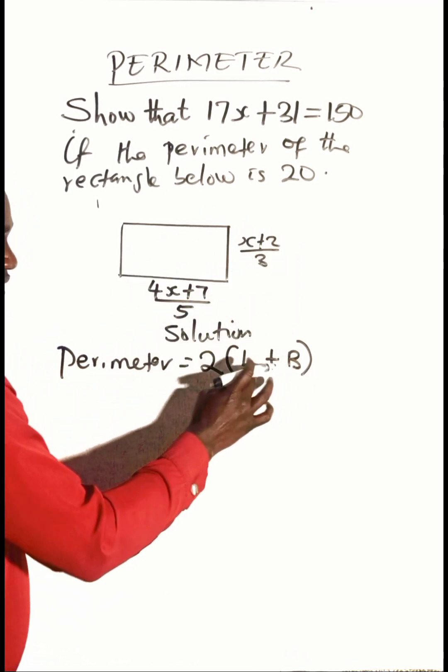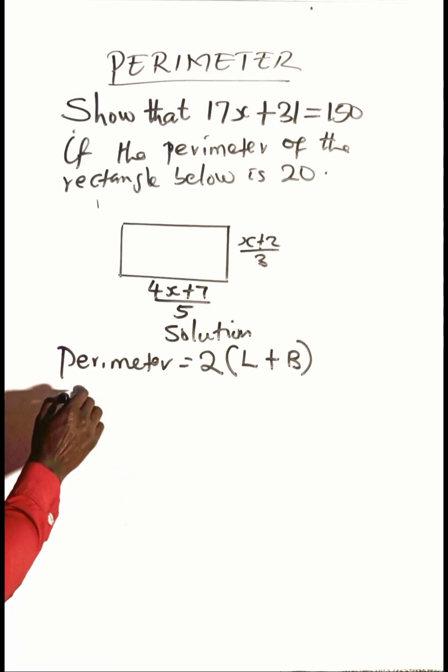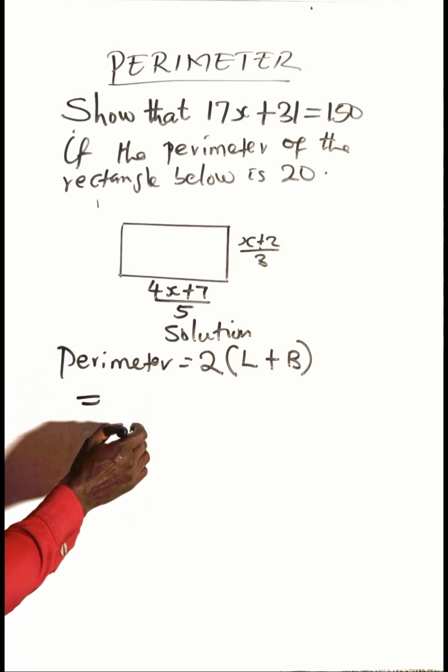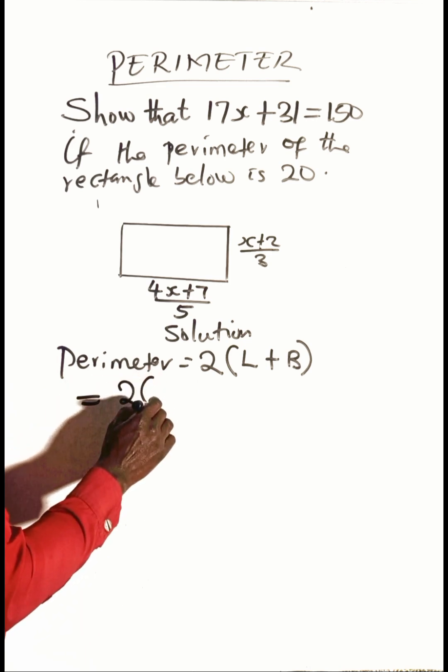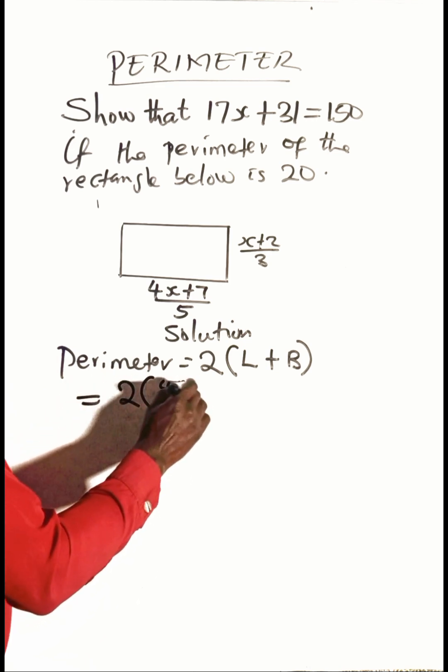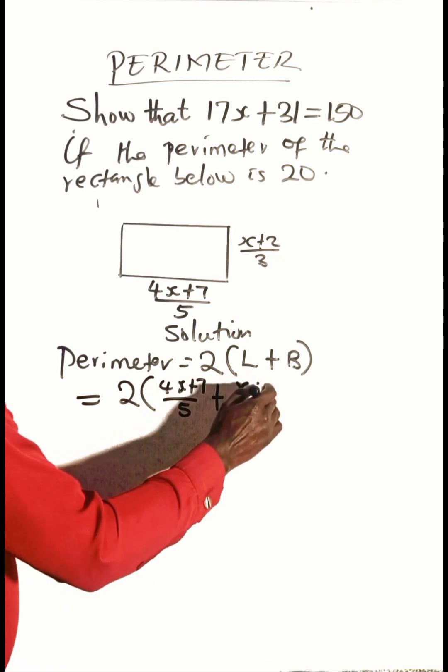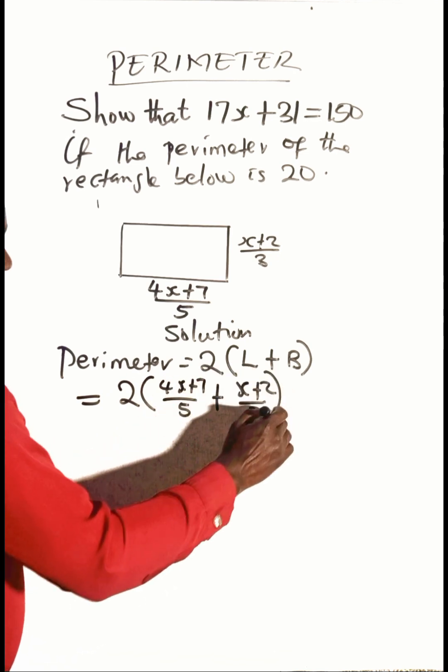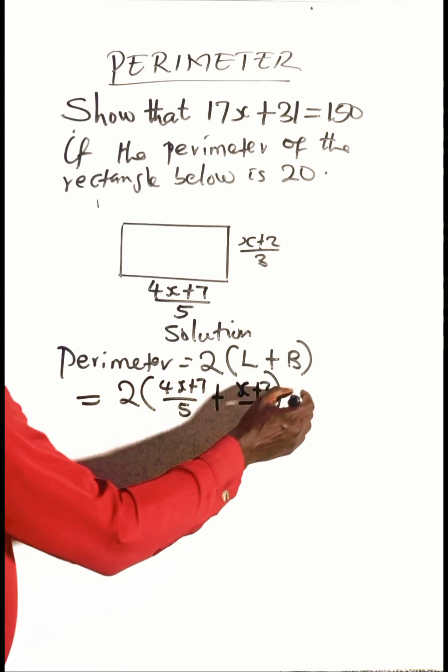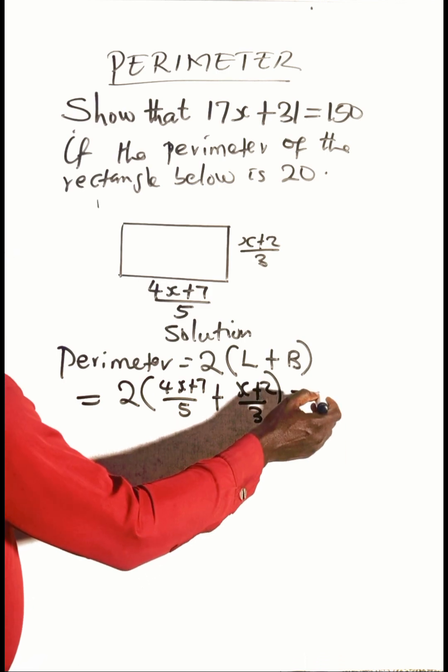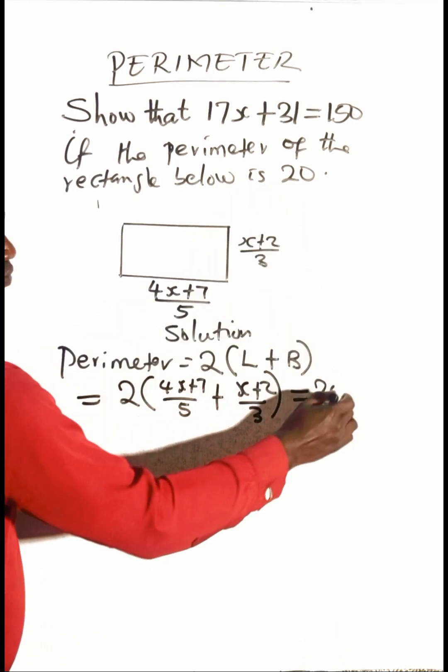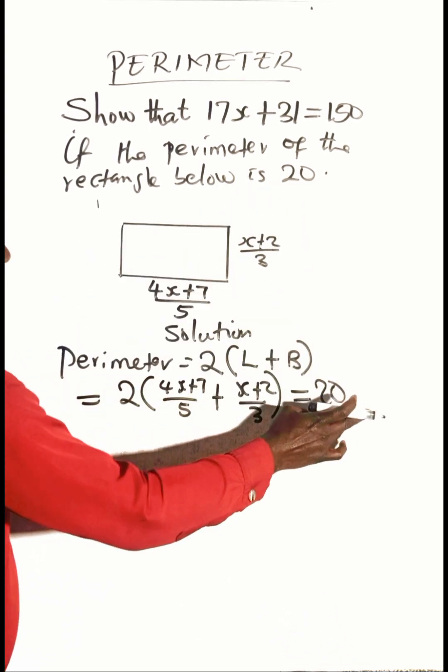If we substitute these values, then the perimeter of this rectangle is 2 brackets 4x plus 7 over 5 plus x plus 2 over 3. Everything is also equal to 20 because the perimeter of this rectangle is given as 20.